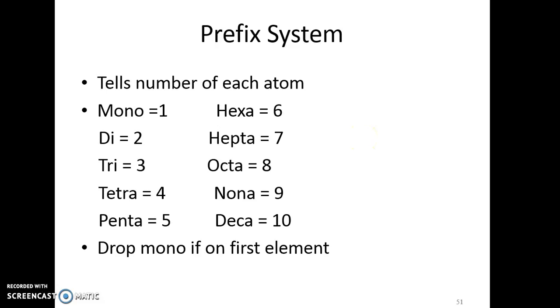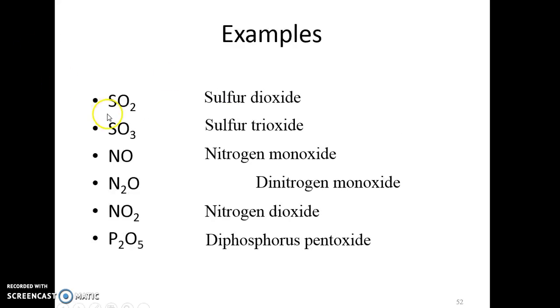So let's look at some examples. Only one sulfur, so we just say sulfur and then dioxide. Sulfur trioxide. Nitrogen. Here we have to use mono because there's only one.